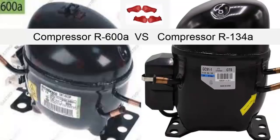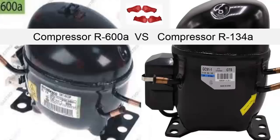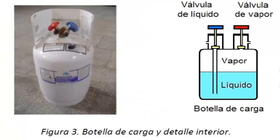The compressor system using R600A gas is more efficient in terms of consumption compared to R134A for the same cooling capacity. The amount of refrigerant charge needed in grams with R134A to achieve the same cooling effect as R600A is much higher.